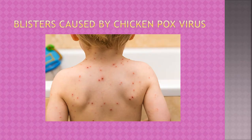Chicken pox virus can cause blisters — a rash on the upper part of the chest, neck, back, and face — which can then spread throughout the body. The person also gets fever, and it takes some time to resolve. These are the symptoms visible on the body of a person infected by this particular virus.